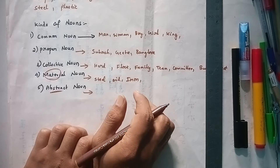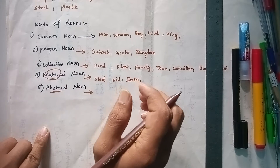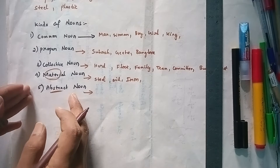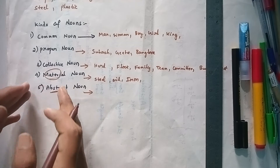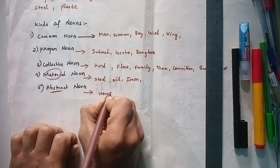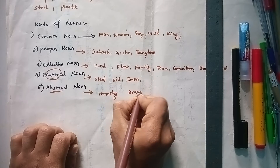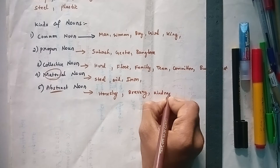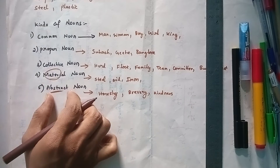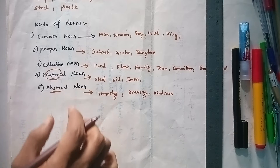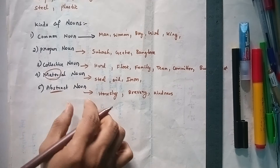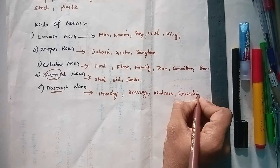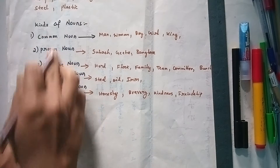Abstract noun means a word used to denote an unseen thing which can only be felt or thought of. Things we do not see with our naked eyes are called abstract nouns. For example: honesty, bravery, kindness, friendship — these are abstract nouns.